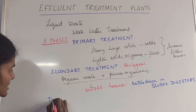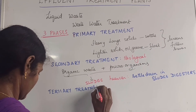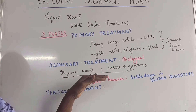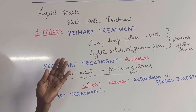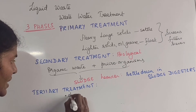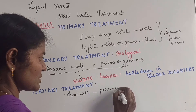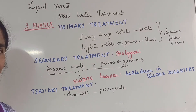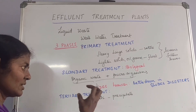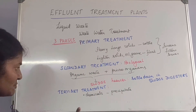Now we move on to the tertiary treatment. Sometimes in the first and second phases, some waste can escape. But whatever has not been treated in the primary and secondary would be addressed in the tertiary treatment. The first thing they do is add chemicals, which will cause precipitation — the particles become heavier and settle down — similar to how adding lemon to milk causes it to curdle and settle. So fine particles still remaining from primary and secondary are made to settle down using chemicals.